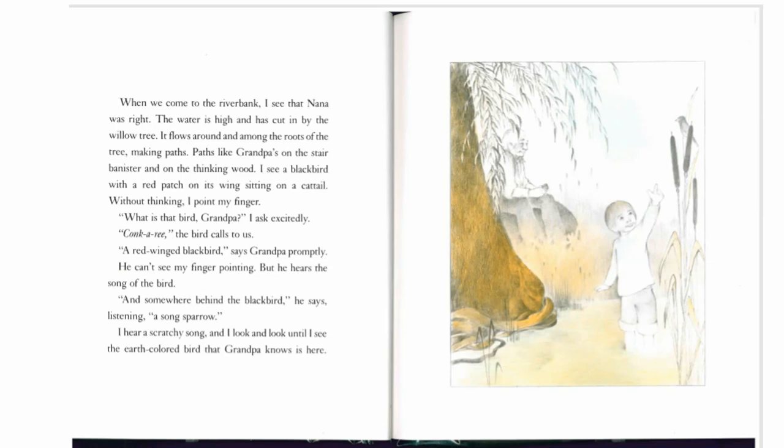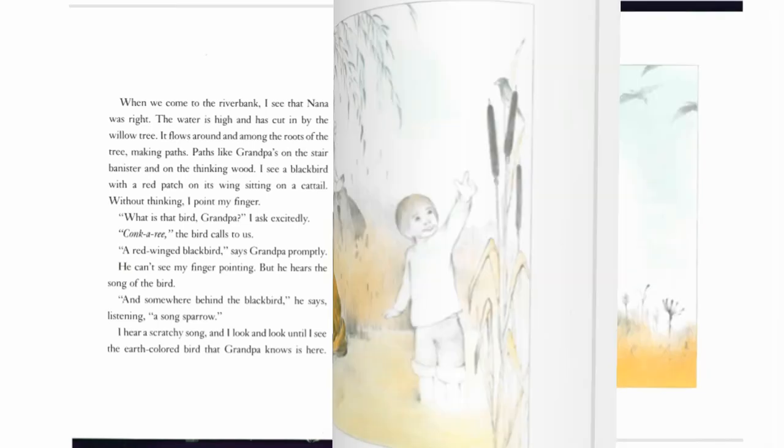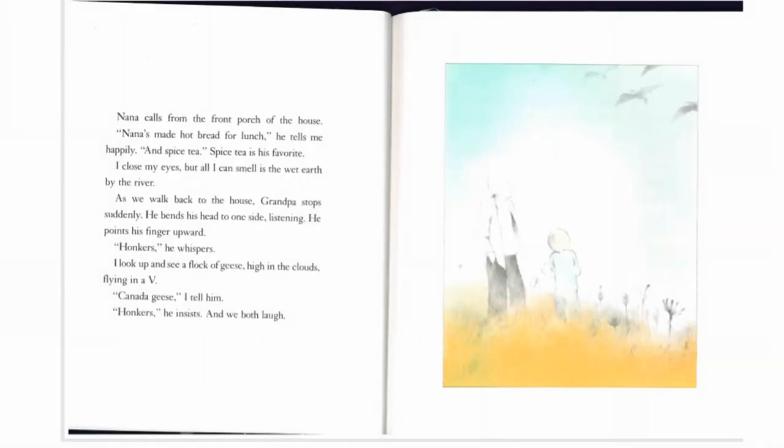I hear a scratchy song and I look up until I see the earth-coloured bird that grandpa knows is here. Nana calls from the front porch of the house. Nana's made hot bread for lunch, he tells me happily. And spice tea. Spice tea is his favourite. I close my eyes, but all I can smell is the wet earth beneath the river. As we walk back to the house, grandpa stops suddenly. He bends his head to one side, listening. He points his finger upward. Honkers, he whispers. I look up and see a flock of geese, high in the clouds, flying in a V. Canada geese, I tell him. Honkers, he insists. And we both laugh.